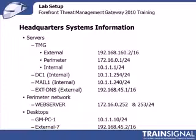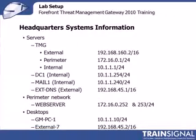On the perimeter network, otherwise known as a DMZ in firewall parlance, we have a server called a web server — pretty self-explanatory — and it will have two IP addresses assigned to it, which you'll learn about later in this course. We also need some desktops, since Threat Management Gateway is much more than just a typical firewall. It's also a system by which you can protect desktop users from malware and other activities on the internet, so we need to be able to do some testing.